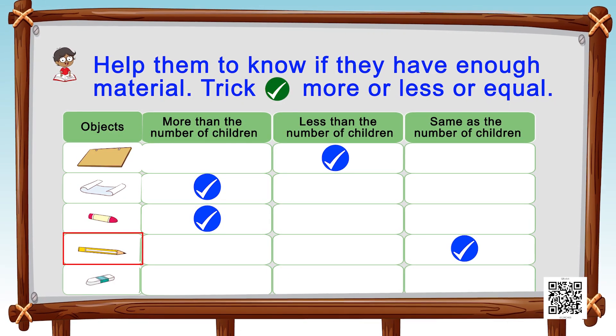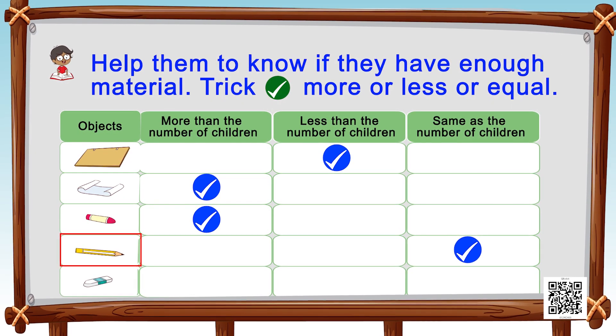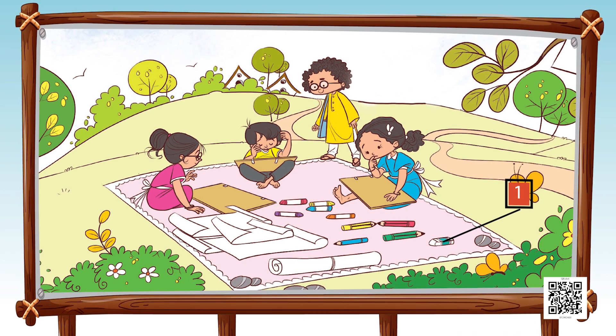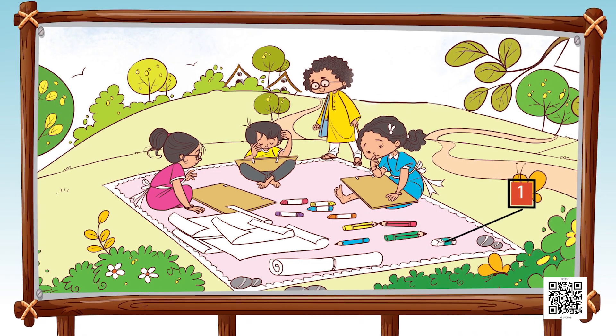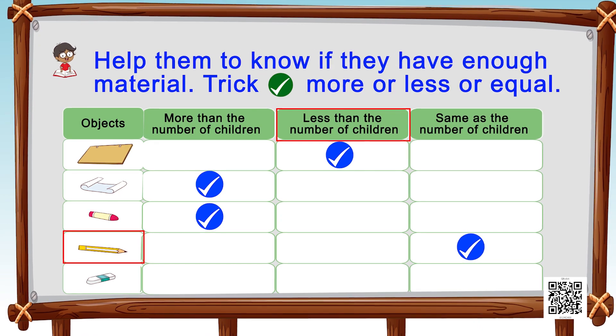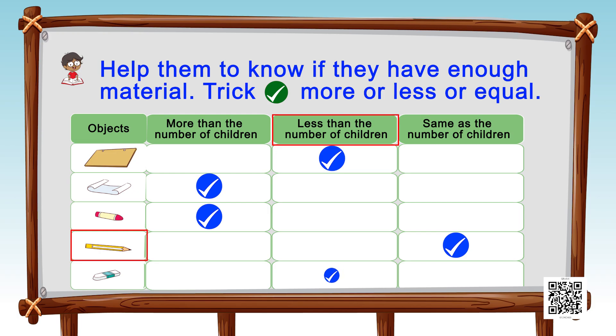Our last object is an eraser. How many erasers do we have? Yes, we have just one eraser, and it is less than the number of children. So we put a tick in the 'less than the number of children' column. Wasn't that fun, children? Let's move on to our next exercise.